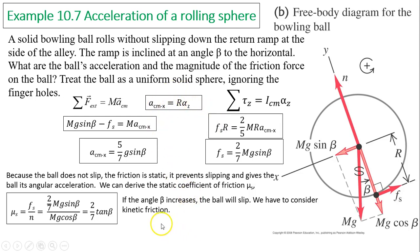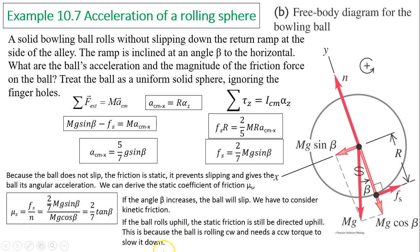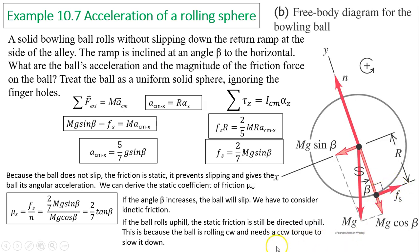If the ball slips, the rolling without slipping relationship no longer holds and we must consider kinetic friction instead. Interestingly, if the ball rolls uphill, the static friction is still directed uphill. This is because the ball is rolling clockwise while slowing down, so it needs a counterclockwise torque to decelerate — that counterclockwise torque is provided by friction directed upward along the hill.